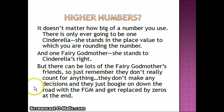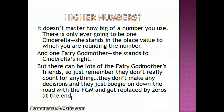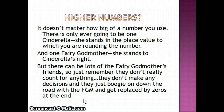What about a higher number? It doesn't matter how big a number you use. There's only ever going to be one Cinderella — she stands in the place value to which you are rounding the number. And there's only ever going to be one fairy godmother — she stands to Cinderella's right. But there can be lots and lots of the fairy godmother's friends. They don't make any decisions; they're just there for moral support. When the job is done, they boogie on down the road with the fairy godmother and get replaced by zeros at the end.